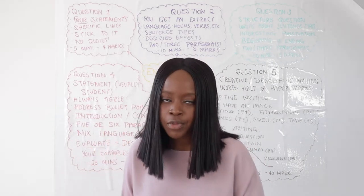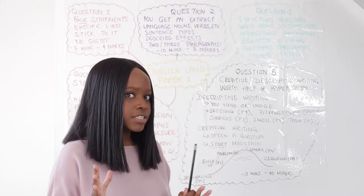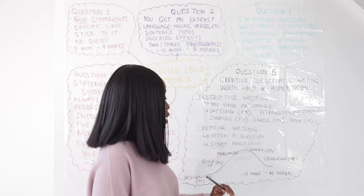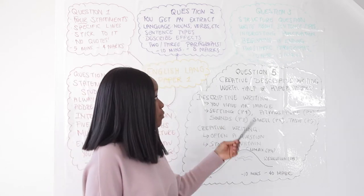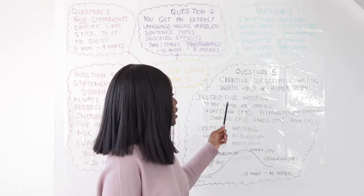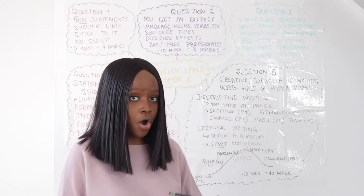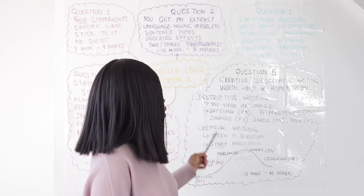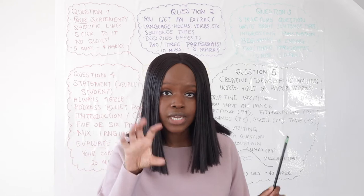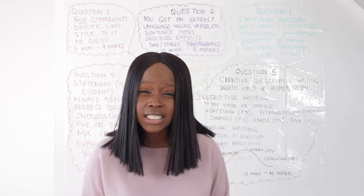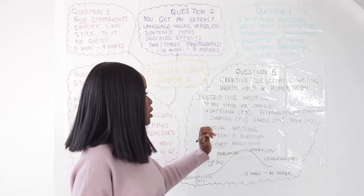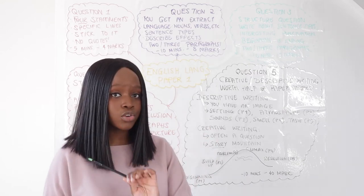The final question — worth half of the paper — is question five. It is usually a creative or descriptive writing question. You either get a descriptive writing question, which tends to come with an image, or a creative writing question.